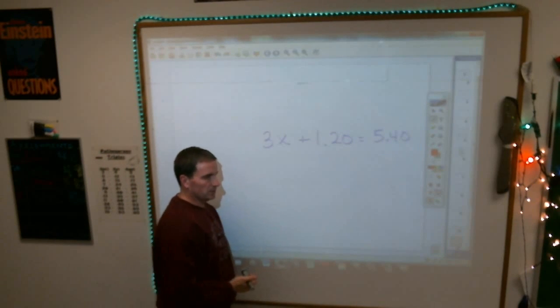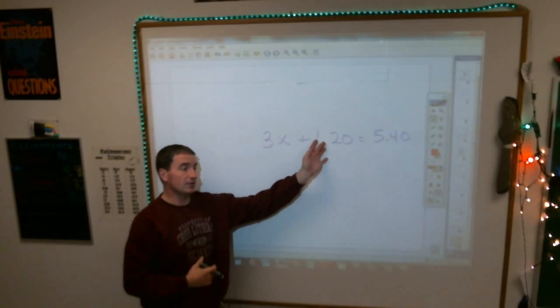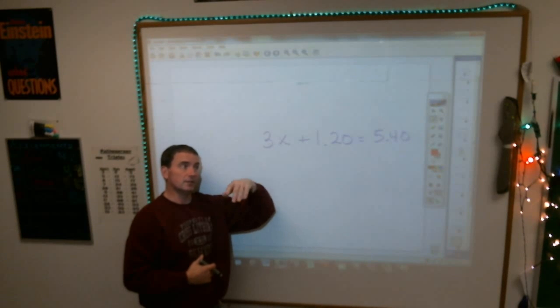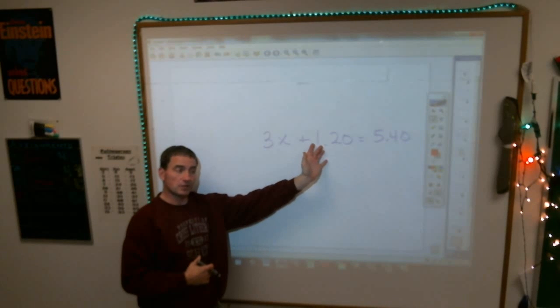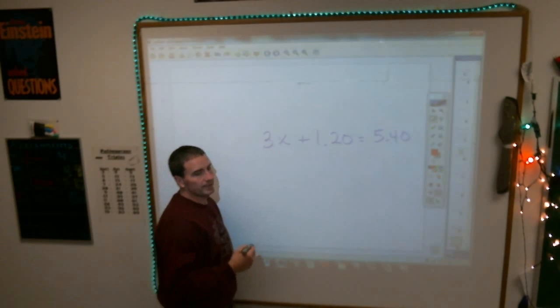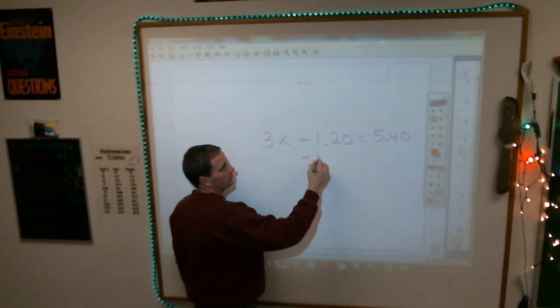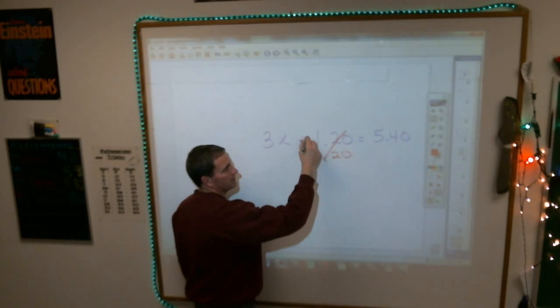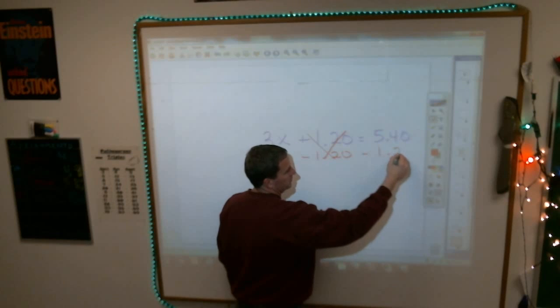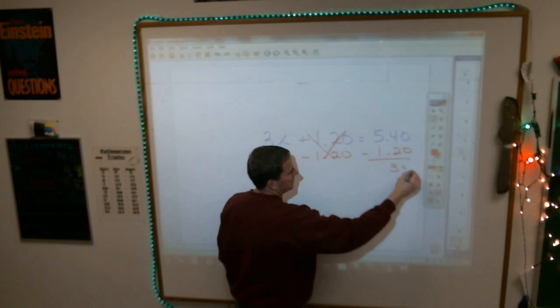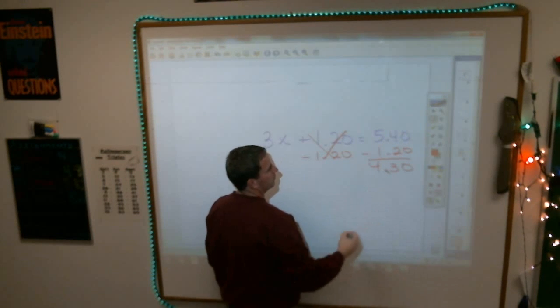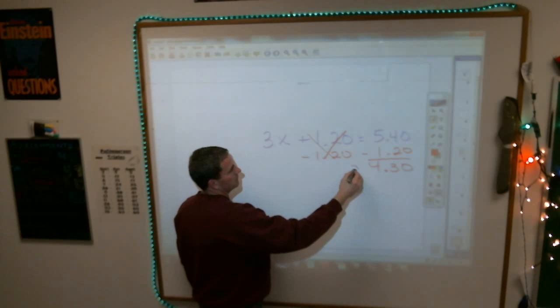All right, so you're looking at this one here. Again, it's a multi-step one because you have addition and you have multiplication again. So to solve it, you're going to have to subtract and divide, but you always do addition, subtraction stuff first with the equation. So the inverse operation for addition is my subtraction. And I subtract 1.20. I subtract my 1.20.